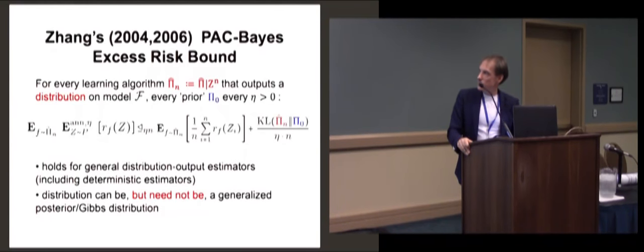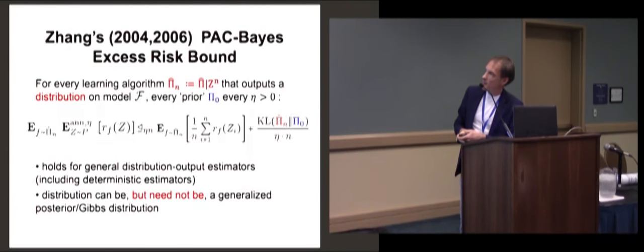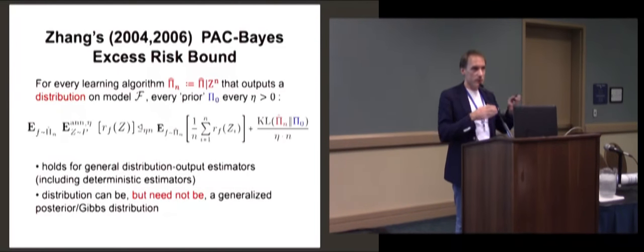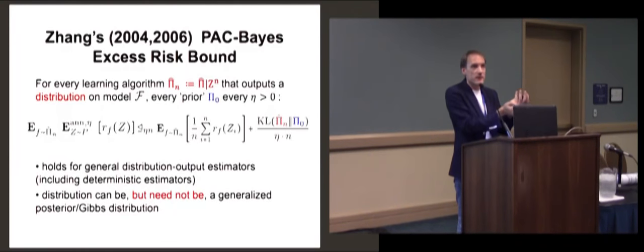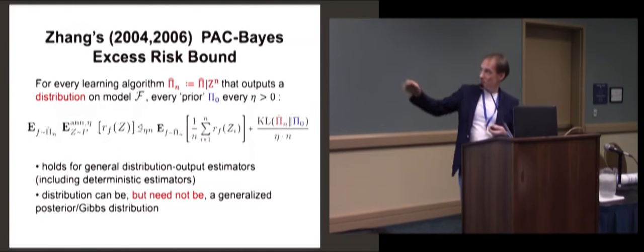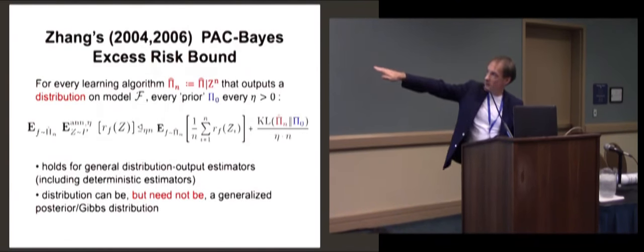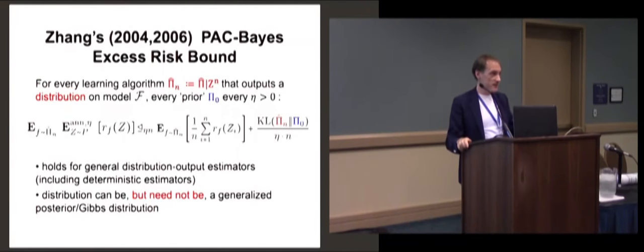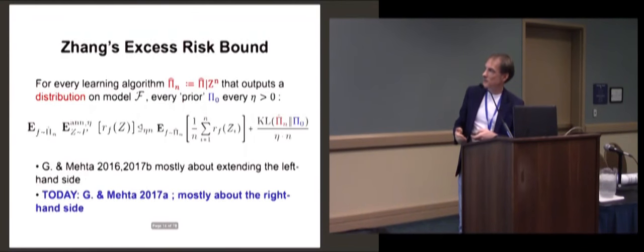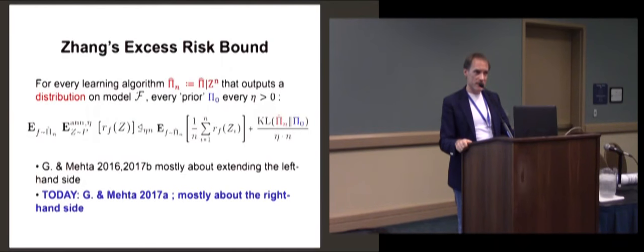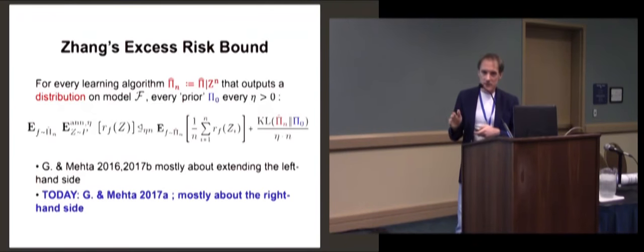What does this bound say? We have IID data from Z_1 to Z_n. The bound holds for arbitrary learning algorithms that output a distribution — P-hat-M could be a Bayesian or generalized Bayesian posterior. A special case is when they put all probability mass on one particular F, such as empirical risk minimization or maximum likelihood. But they can also output a distribution over F, like Bayesian estimators. We have a prior distribution on F, and this holds for any prior you like. It says something about how the F you learn from the data will tend to behave on future data.